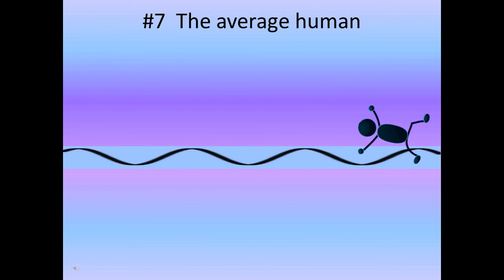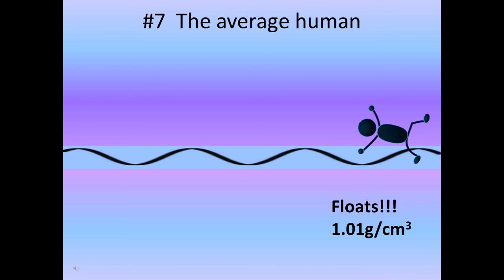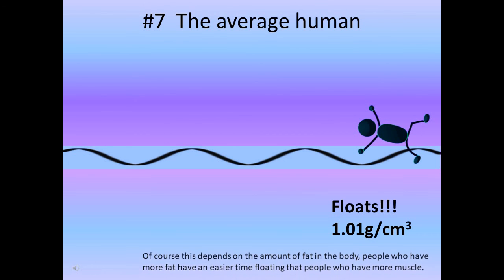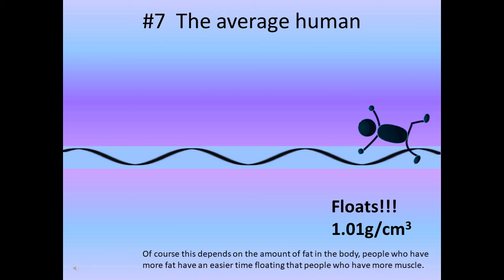The average human would actually float. Average humans have a density of roughly 1.01 grams per centimeter cubed. People with more body fat have an easier time floating than people with more muscle, which explains why floating is harder for some people than others.